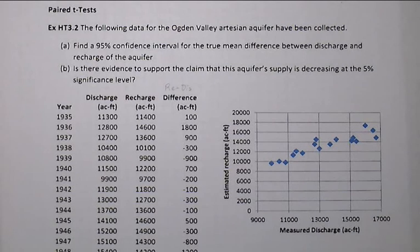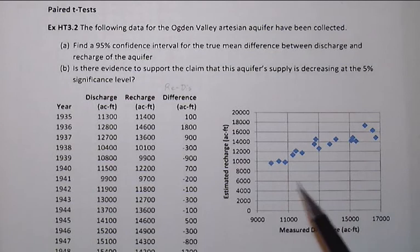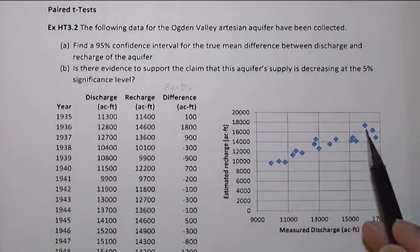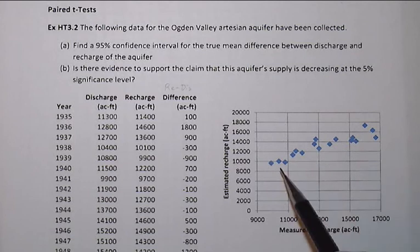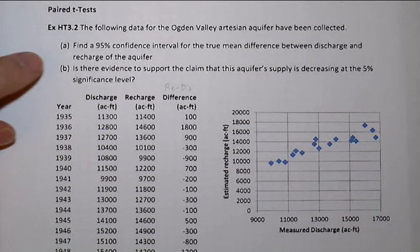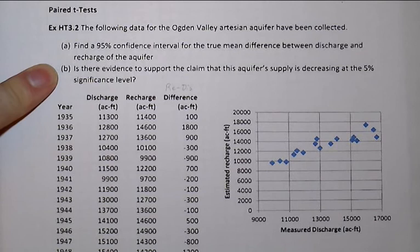Now you'll see over here on the right a scatter plot of the estimated recharge versus measured discharge. And note that we have a fairly strong linear trend. In fact, the sample correlation coefficient between those is on the order of about 0.9. So a very strong linear relationship between those two. And that will influence how we end up thinking about the results here of the question.